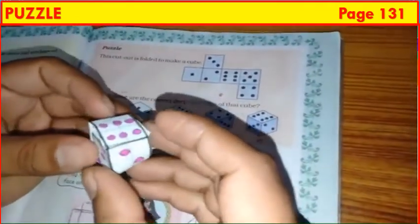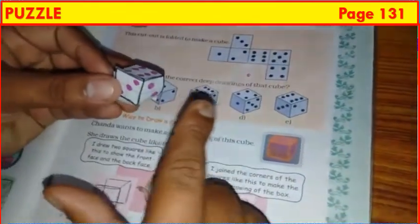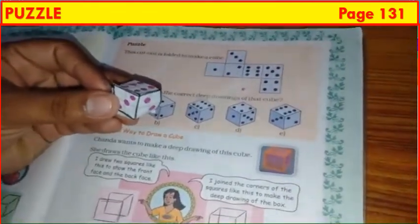Now, consider figure C. On the top, 6 is there. On the left side, 5 is there. But the cube has 3 there. Means, this figure C is also wrong.